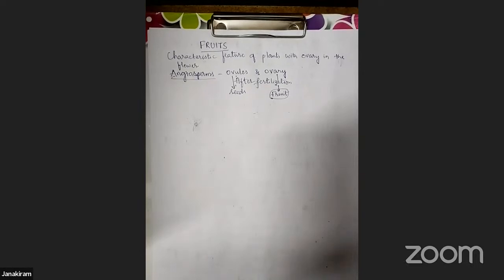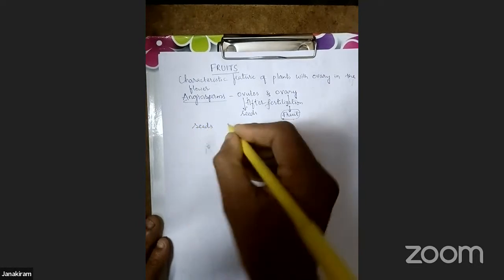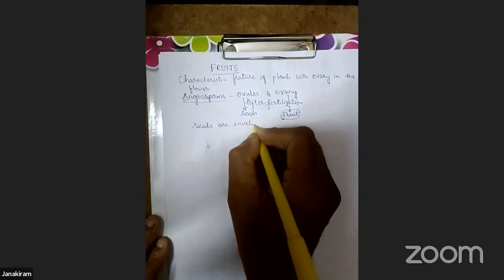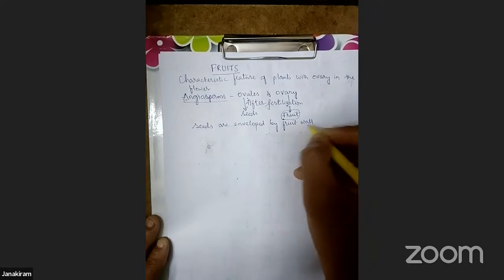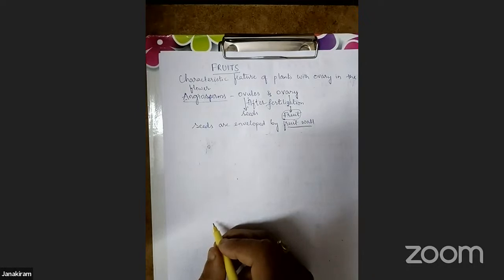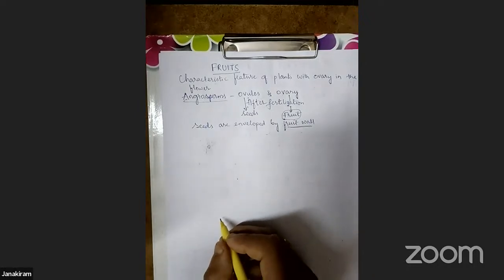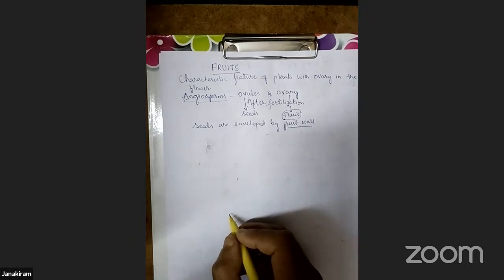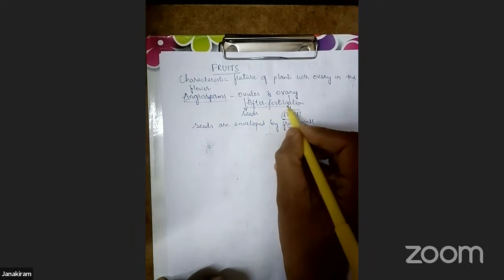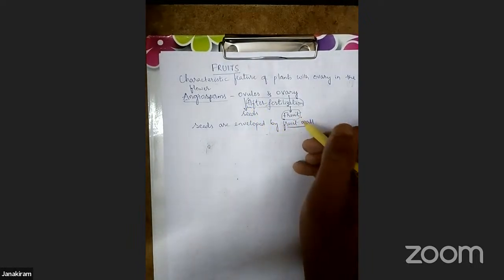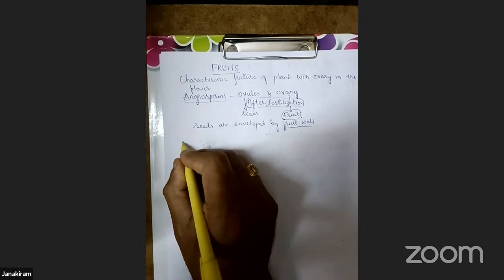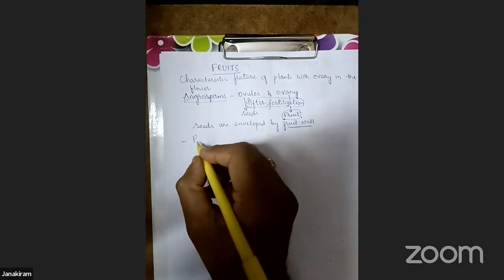As a result of fertilization, ovules are converted into seeds and the ovary is converted into fruit. The fruit encloses the seeds — seeds are enveloped by the fruit wall. Every fruit has two main parts: seeds and a fruit wall. However, there are some cases where parthenocarpic fruit formation is present.